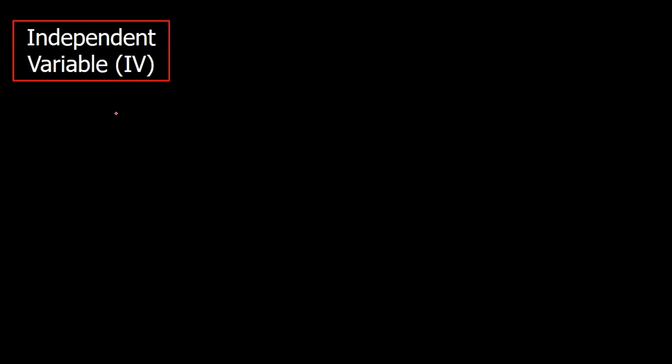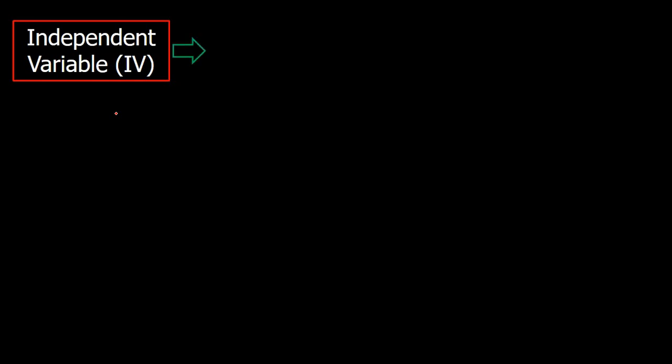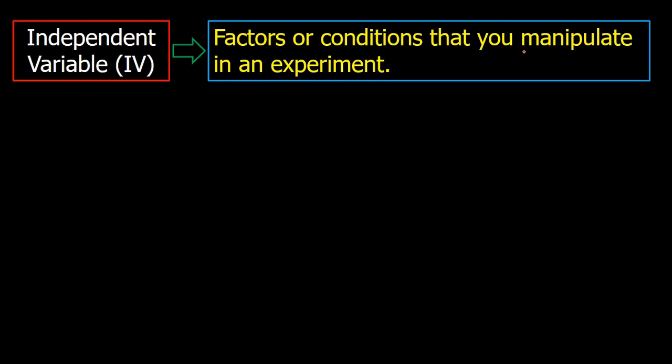There are three types of variables. The first one is the independent variable, or IV. The independent variable is a factor or condition that you manipulate in an experiment. The key word here is manipulate.